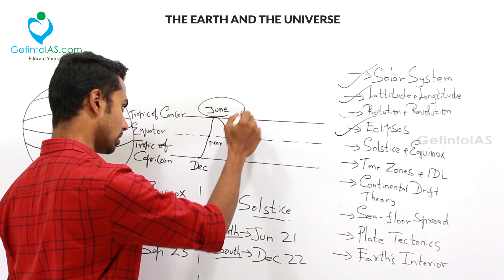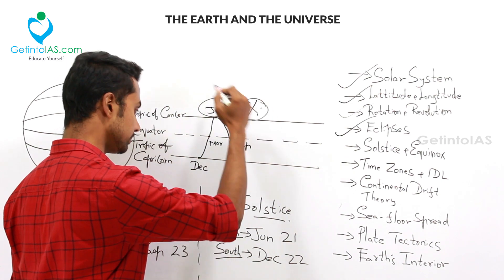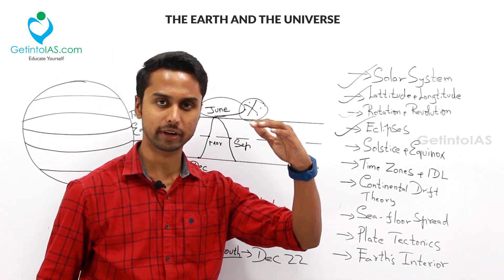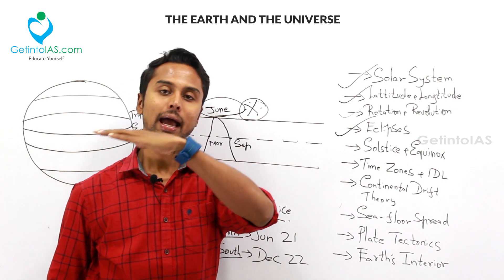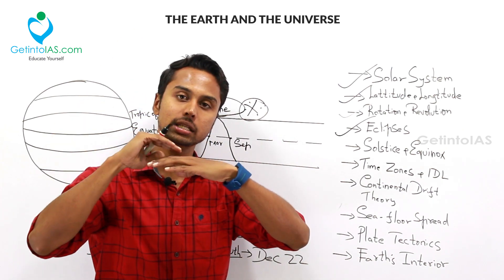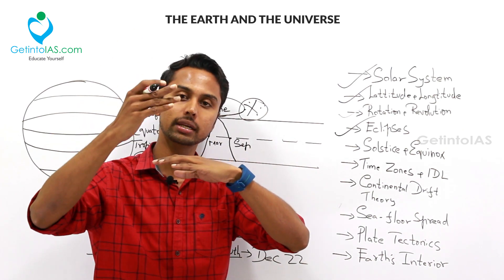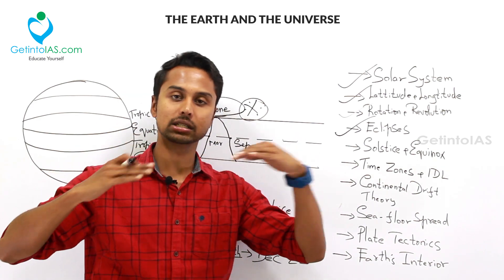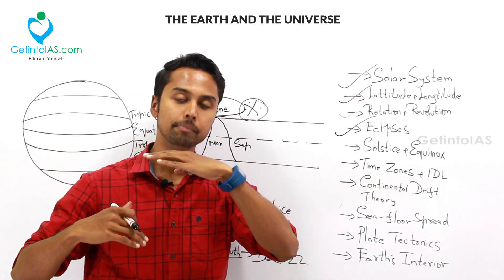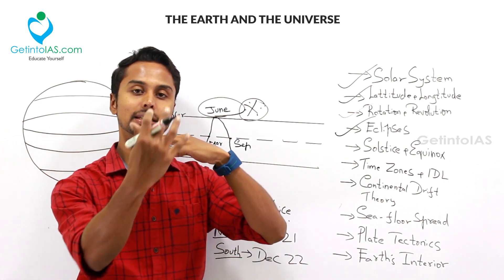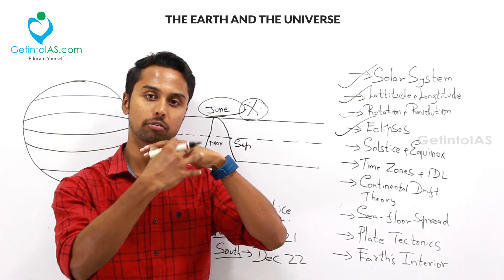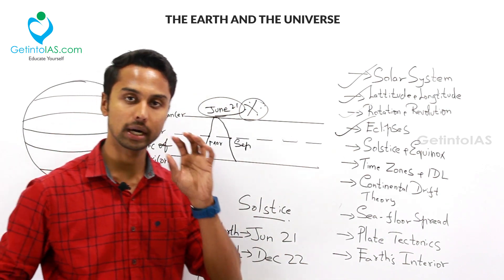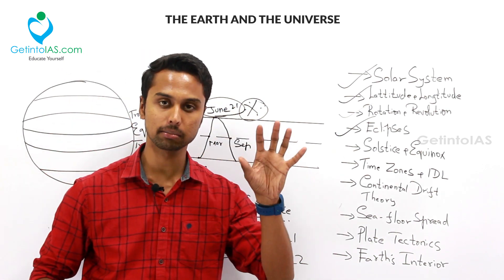Northern solstice becomes important with respect to India. The Tropic of Cancer passes through India and divides India into northern and southern India. Since the Tropic of Cancer divides India, and during northern solstice the sun's rays are directly falling on the Tropic of Cancer, we celebrate June 21 as International Yoga Day — there is some significance in that.